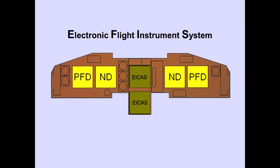The electronic flight instrument system, or EFIS, is comprised of the primary flight display, PFD, and the navigation display, ND.